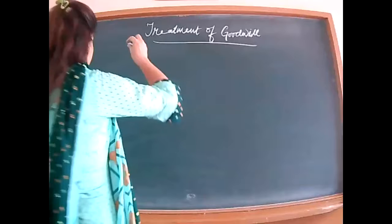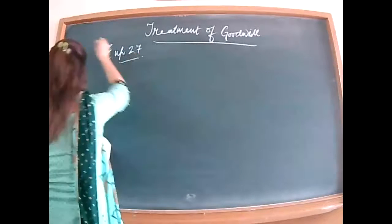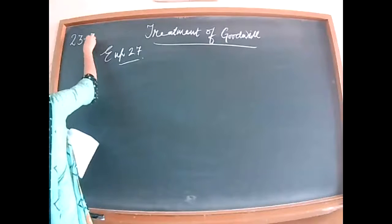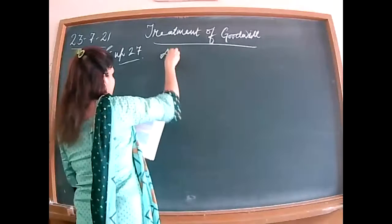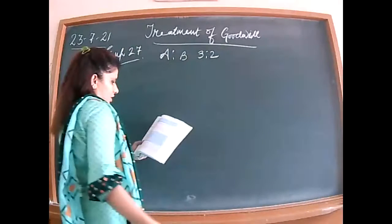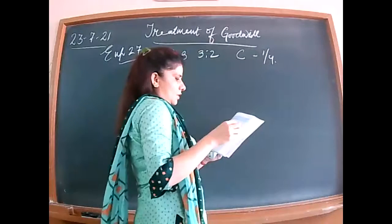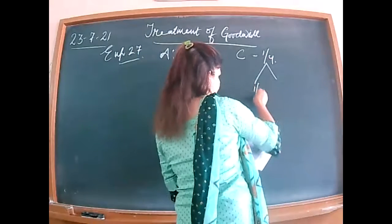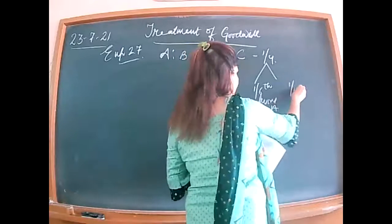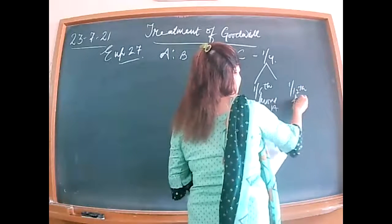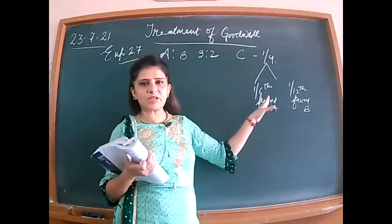In illustration 27, A and B are partners with profit sharing ratio 3 is to 2. C is admitted for 1/4th share, taking 1/6th from A and 1/12th from B. Counter-check: the denominator should be the same, so 2/12 plus 1/12 equals 3/12, which equals 1/4. Verification confirmed.